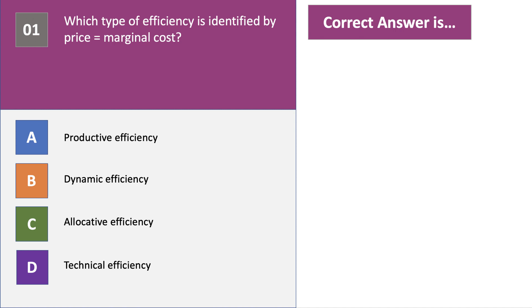Price equals marginal cost is the condition for allocative efficiency. Productive efficiency is where output is at minimum average cost.